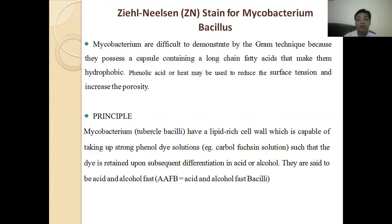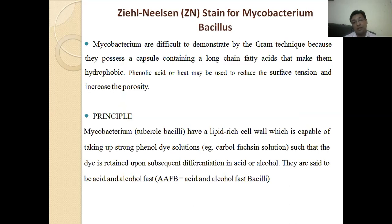The next cytological special stain is Ziehl-Neelsen stain, which is used for Mycobacterium bacillus. Mycobacteria are difficult to demonstrate by the Gram technique because they possess a capsule containing long-chain fatty acids that make them hydrophobic. Phenolic acid or heat may be used to reduce the surface tension and increase the porosity. Now we move to the principle of the Ziehl-Neelsen staining method.